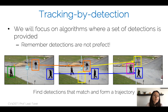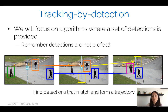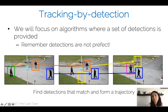When we cannot match a detection, we typically end the trajectory at the last matched frame and start a new trajectory from the new detection. This is not ideal but allows recovery from mistakes. We'll also see methods to link fragmented trajectories — such as the green and pink trajectories — using a strong appearance model to close these gaps.